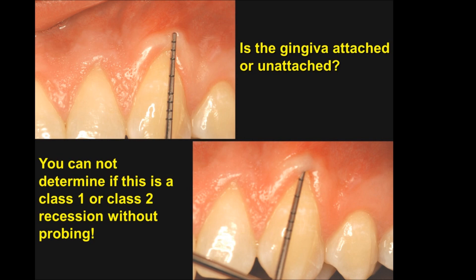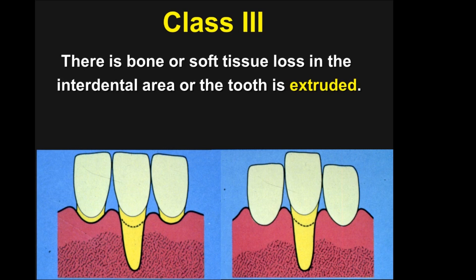Why is that significant? If we have attached gingiva, we have a barrier and a healthy situation. However, if we do not have that barrier and the gingiva is unattached, we have a potential problem. Class I recessions are grafted mainly because of sensitivity and aesthetics; Class II also has a functional or disease component. Class II recessions should be grafted; Class I recessions may be grafted.